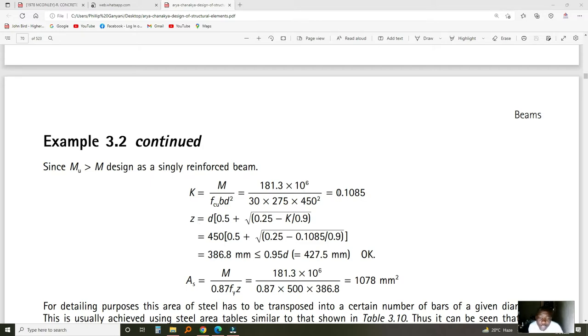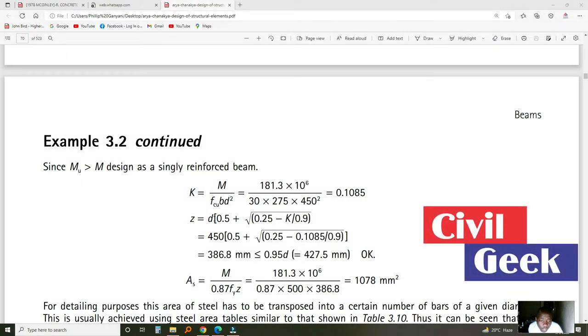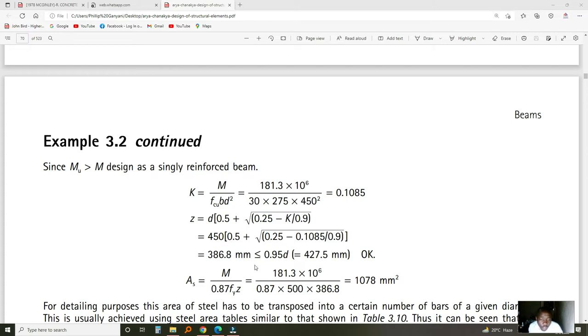When you have the K value, you use it to calculate the lever arm in millimeters. Lever arm is D, the depth to the center of reinforcement, times 0.5 plus the square root of this combination. Before substituting, calculate the part without D first. That number should be less than 0.95 times D. So instead of this value, you multiply by 0.95 times D, which is 427.5 mm. Since this is less than 0.95 times D, you have the okay to proceed to calculate the area of reinforcement.